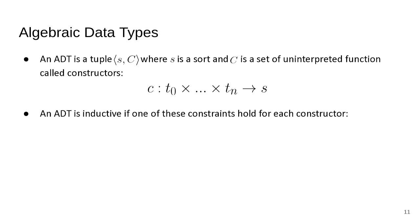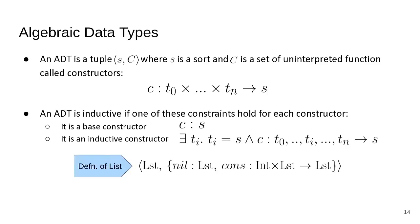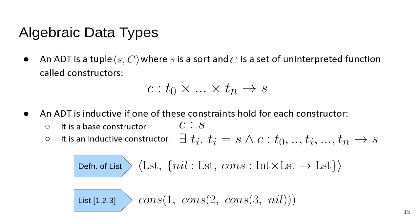We say an algebraic data type is inductive if one of two constraints holds for each constructor in our set C: it is a base constructor, in which case its type is just S, or it is an inductive constructor, in which case one of its input types is the sort S. For lists, nil is the base constructor and cons is the inductive constructor. A linked list is encoded as a sequence of applications of these functions.